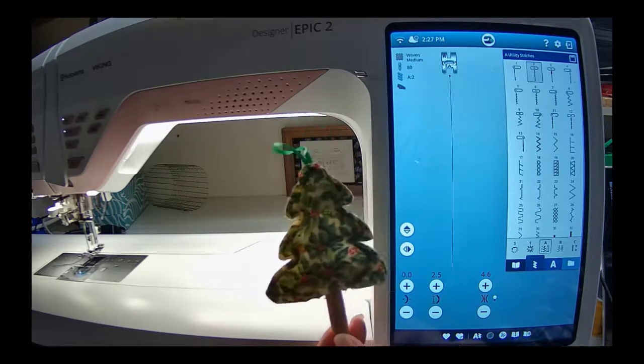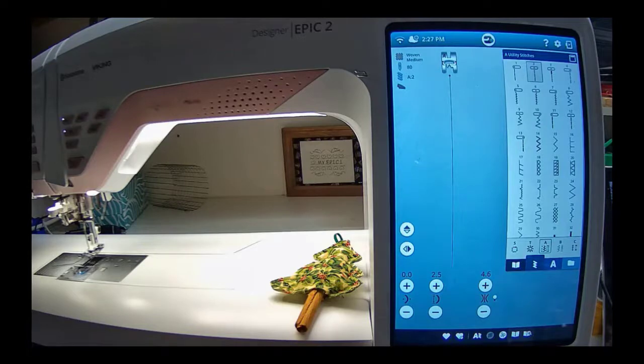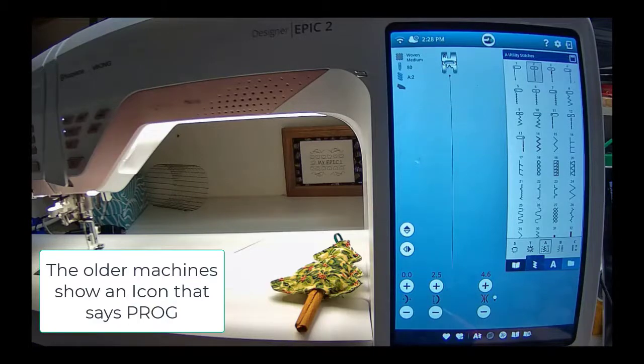It can also be done in the Ruby 90. The original Epic and the 95Q are going to be similar. There's just going to be some little differences, and one of them is going to be how you get to programming. We're going to do this all in sewing mode. Nothing's done in embroidery, so this is a really easy thing to do for everybody.